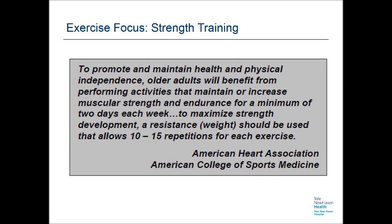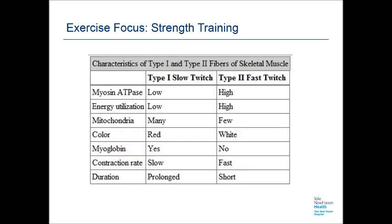Type two fibers are further divided into type two A and type two B fibers. Type one fibers have low power but good endurance and are used during prolonged activities like walking and for maintaining posture. Type two B fibers have high power but low endurance — they fatigue quickly. Type two A fibers are a mix of type one and type two B and are used for activities that require both strength and endurance. It is the type two muscle fibers that are affected most with aging, resulting in losses in strength and power.